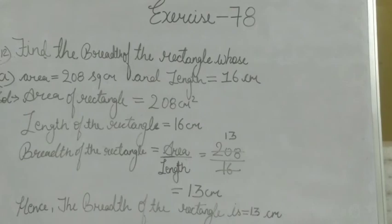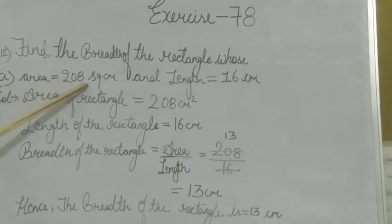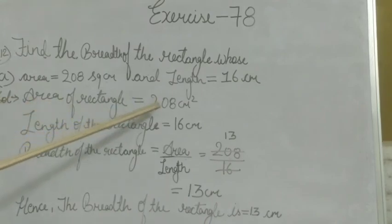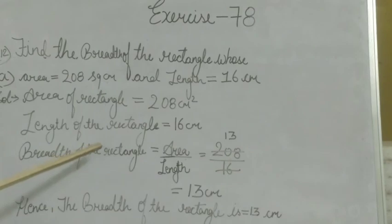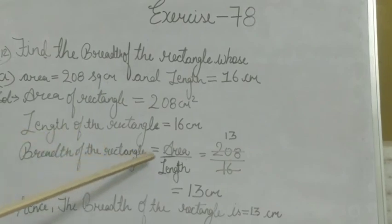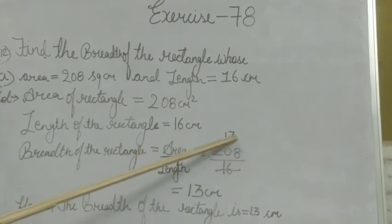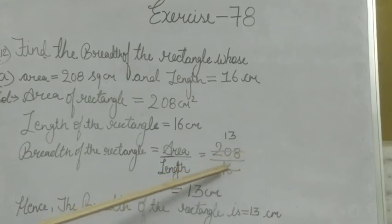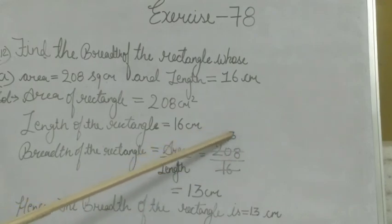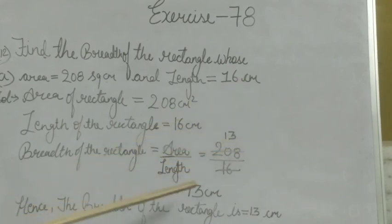Next question, question number 12: find the breadth of the rectangle where area is 208 square cm and length is 16 cm. The area of the rectangle is 208 square cm and the length is 16 cm. The breadth of the rectangle equals area divided by length. Area is 208 and length is 16, so 208 divided by 16. In the 16 times table, 208 comes 13 times. Therefore we get 13 cm. Hence, the breadth of the rectangle is 13 cm.